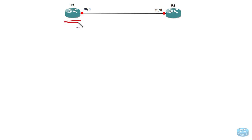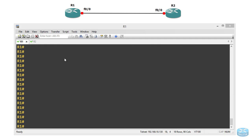We have two routers here, Router1 and Router2. What we are going to do is we are going to configure Telnet on Router1 and then we are going to access Router1 from Router2. I have two routers up and running now, so we are going to go to Router1 first and configure Telnet on it.